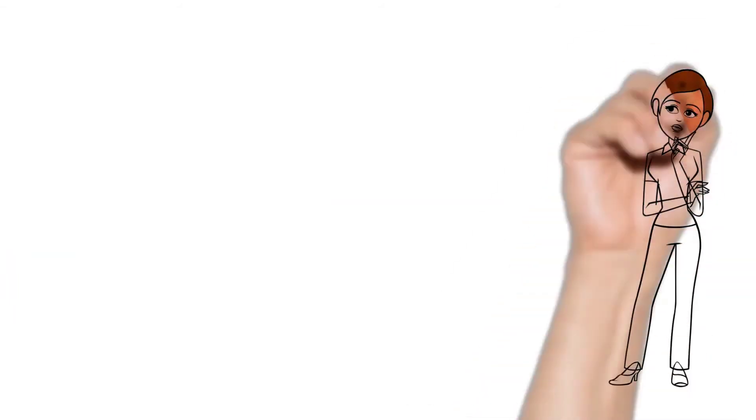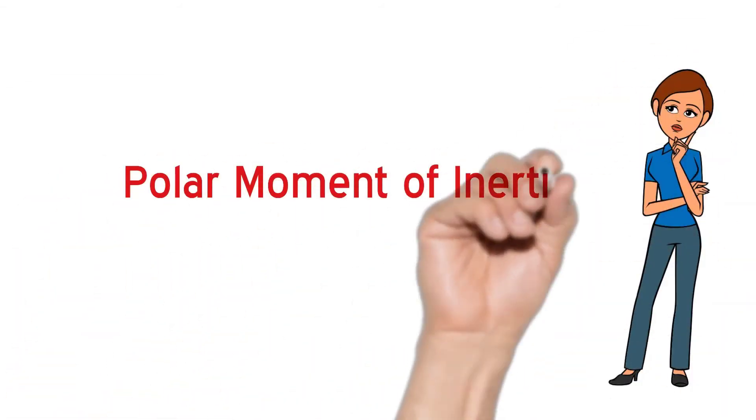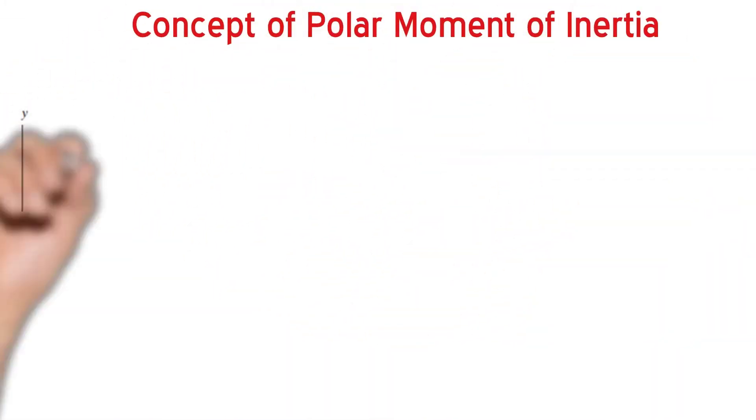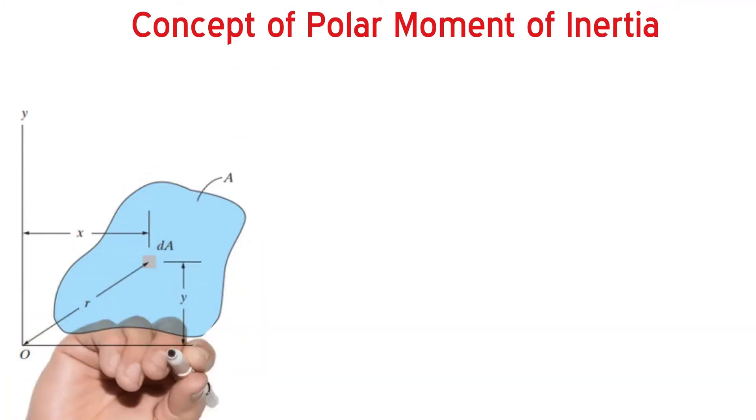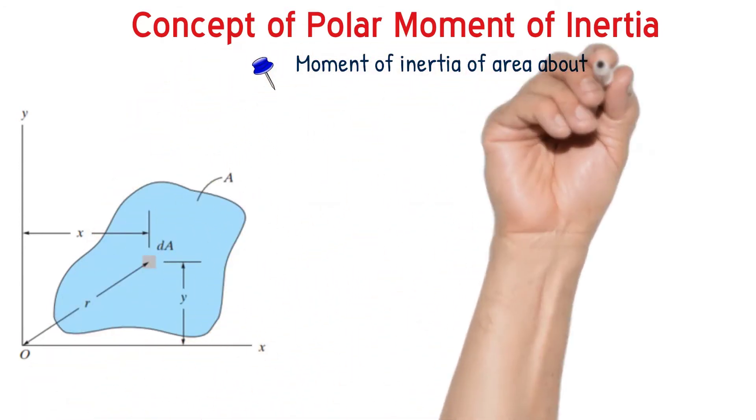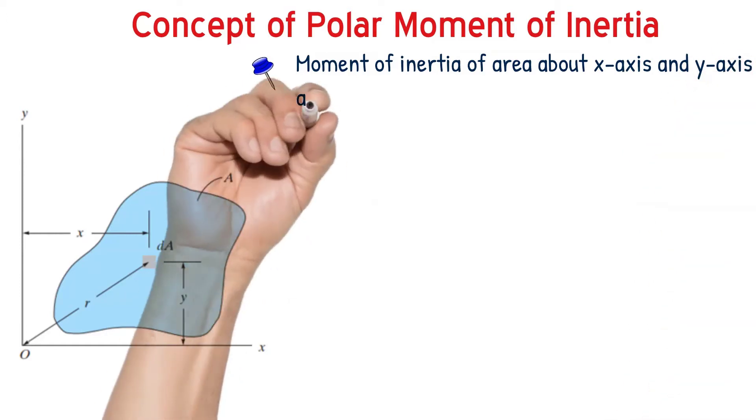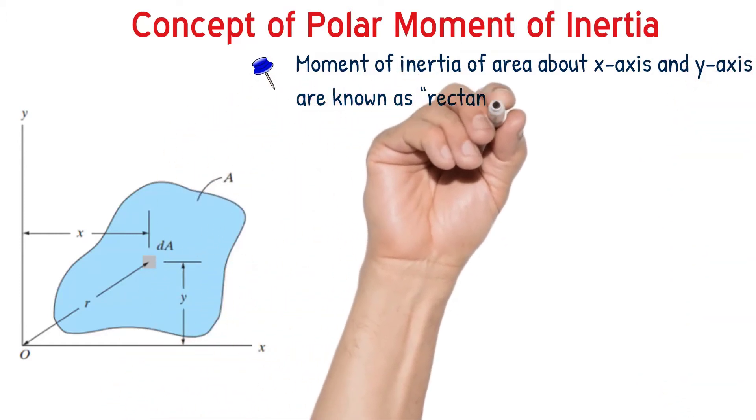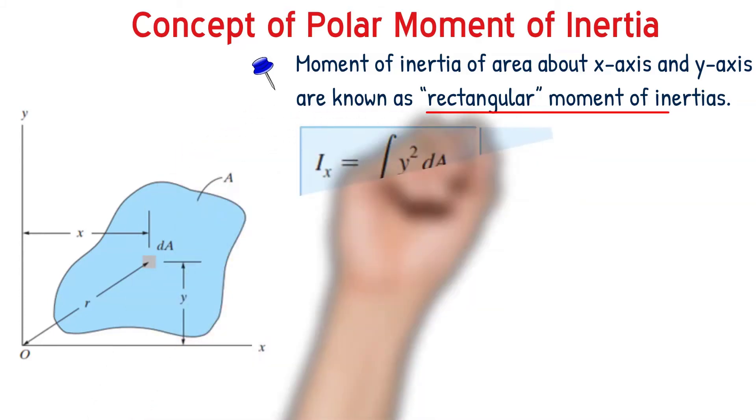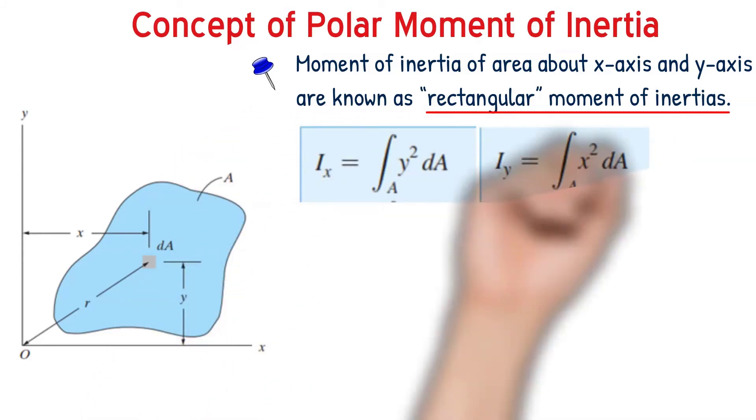Finally, let us try to understand clearly the meaning of polar moment of inertia. Polar moment of inertia is also the property of an area. Consider the area A shown there. If we determine moment of inertia, which is the second moment of area, about x and y axis, they are known as rectangular moment of inertia or area moment of inertia.